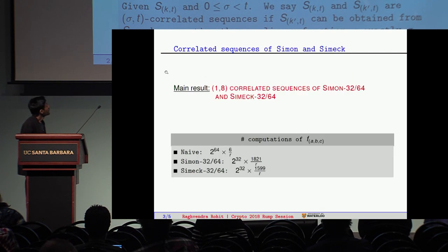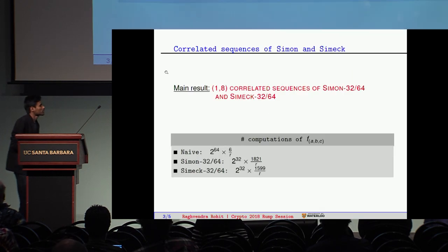This is our main result on these two block ciphers. We can theoretically construct one eighth correlated sequences for both these two ciphers. That means if we want output of these two ciphers after six rounds, we need to compute this F only this many times compared to the naive approach which requires this.